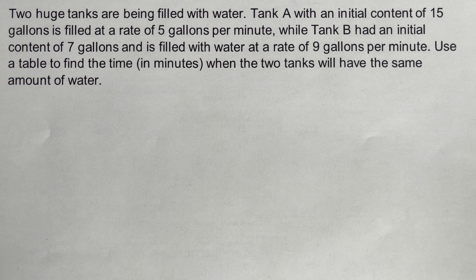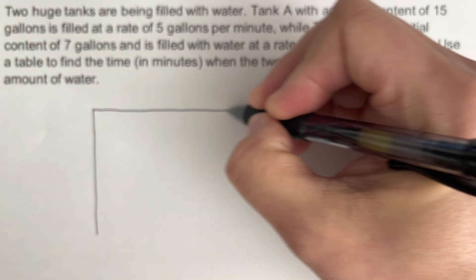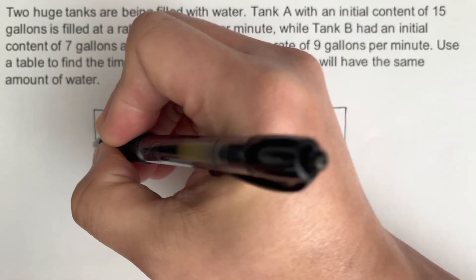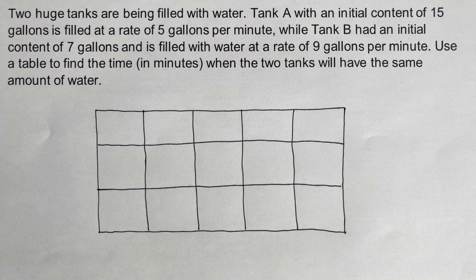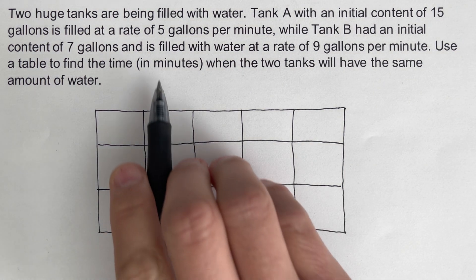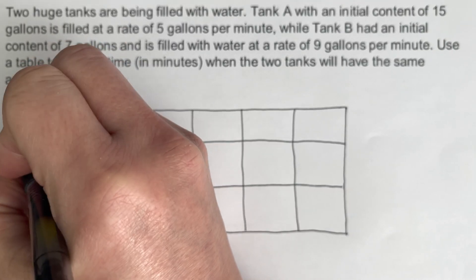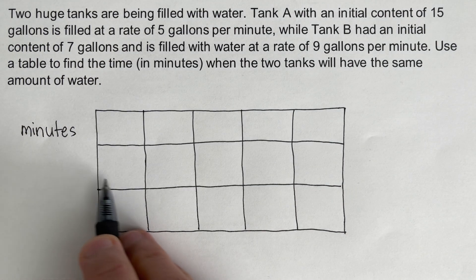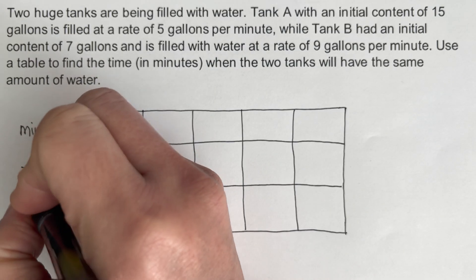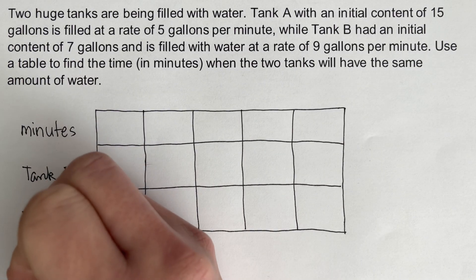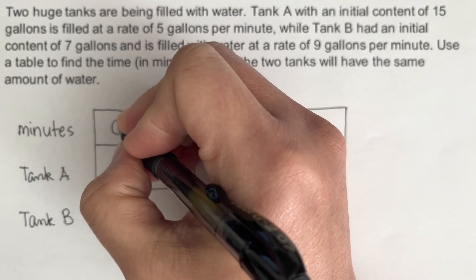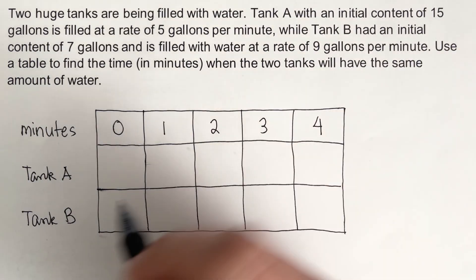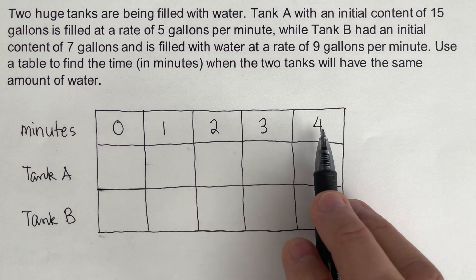We are going to create a 5 by 3 table for this problem. Let's label the table: this problem is in minutes, so I'll write 'minutes' on the first row. The second row will be for Tank A, and the third row will be for Tank B. For the minutes, we're going to start with zero, one, two, three, and four — meaning zero minutes, the first minute, second, third, and fourth minute. Zero is our starting value, or initial value.